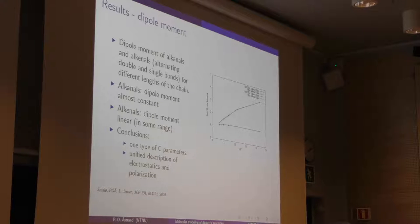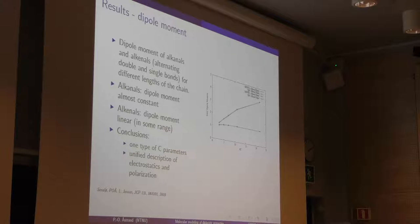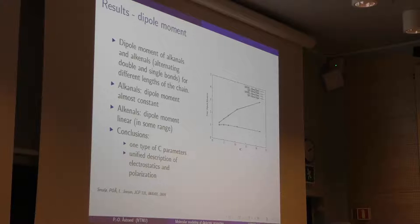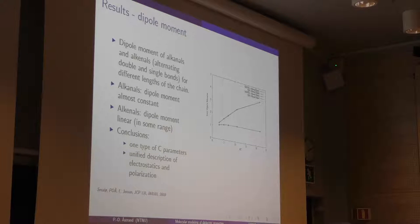As a simple example, the first thing we did was take a polyene and an alkane chain. This is the dipole moment of the system versus the number of carbon atoms. We put an aldehyde at the end of the chain so we actually had a dipole moment. The dipole moment of the polyene increases quite a bit — around a factor of 3 to 4 — when you increase the chain length, because charge moves further and further away. Whereas for the alkane it's almost constant — the polar groups are still just at the end of the chain. We model that with only one type of carbon parameter.